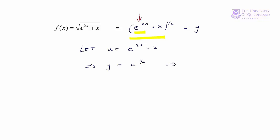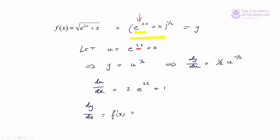So dy/du = (1/2)u^(−1/2). Now finding du/dx — this is where we apply our rule. We have g(x) = 2x, so g'(x) = 2, giving 2·e^(2x). That's the first term plus 1. Then dy/dx = f'(x) = dy/du · du/dx.